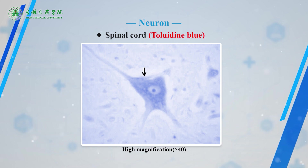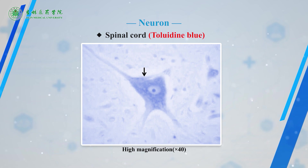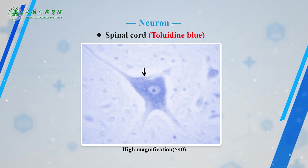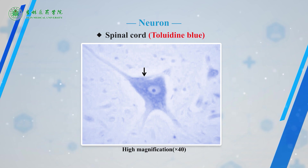The irregular cell body contains a spherical, unusually large, vesicular, pale-staining nucleus with a prominent nucleolus. The nuclear membrane is quite clear, and the chromatin is finely dispersed. The cytoplasm is rich in clumped strands and well-lit stains. These bodies extend from the cell body and become thinner as they subdivide into branches, like the arborization of a tree.